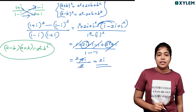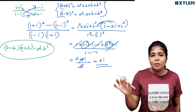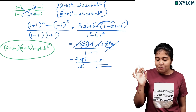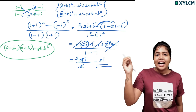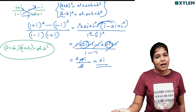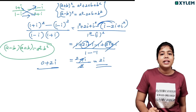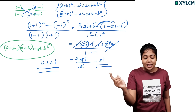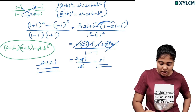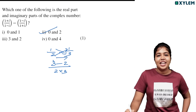So the answer is 2i. In A plus iB form this is 0 plus 2i. Real part is 0, imaginary part is 2. Option B is the right answer.